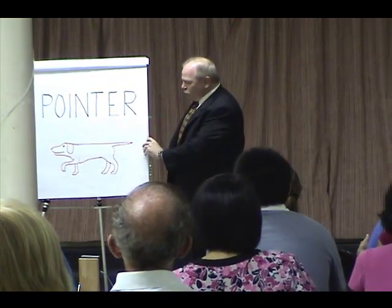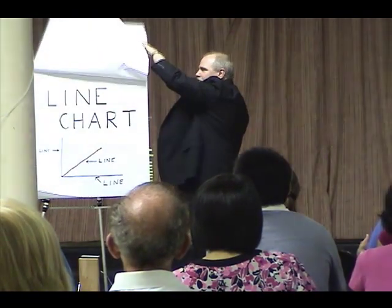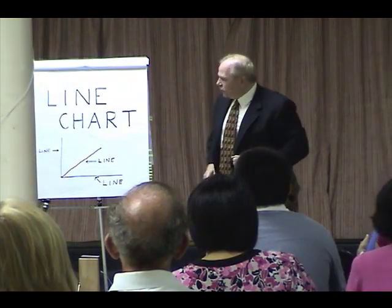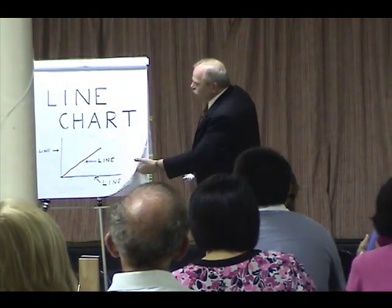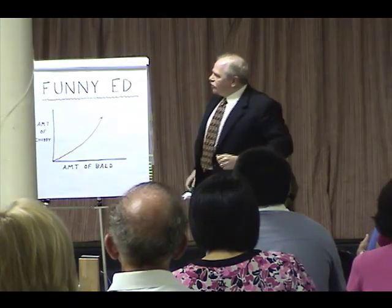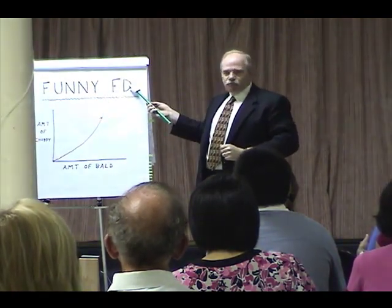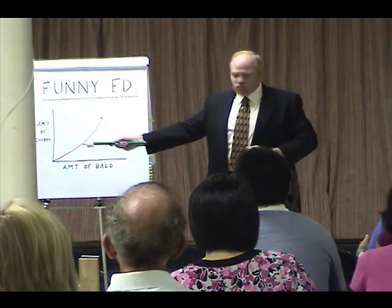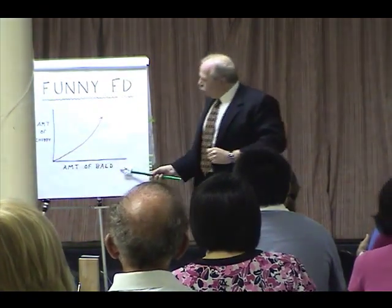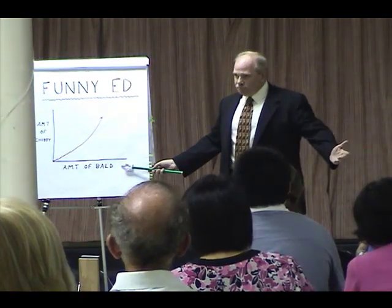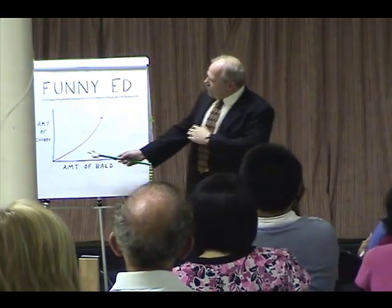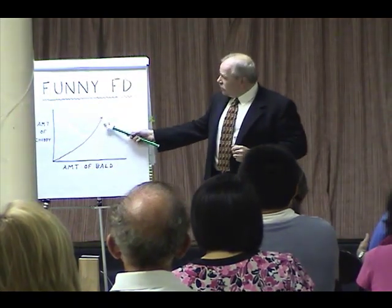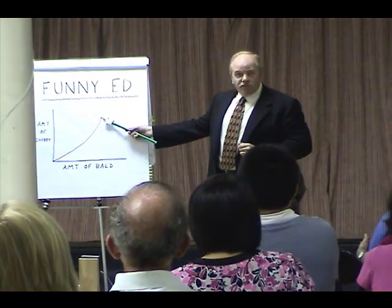And we'll start with the line chart. The line chart compares different data sets to each other to see what the effect is. So let's start with the first chart, which is about funny. On this line we have the amount of chubby, but on the bottom here we have the amount of bald. And as you can see, the chubbier and balder he gets, the funnier he is.